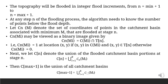The topography will be flooded in integer flood increments from n equal to minimum plus 1 to n equal to maximum plus 1. At any step n of the flooding process, the algorithm needs to know the number of points below the flood depth. Let cn denote the set of coordinates of points in the catchment basin associated with minimum m that are flooded at stage n. cn may be viewed as a binary image given by cn = c ∩ t. That is, cn(mi) = 1 at location (x,y) if (x,y) ∈ c(mi) and (x,y) ∈ t; otherwise cn(mi) = 0.